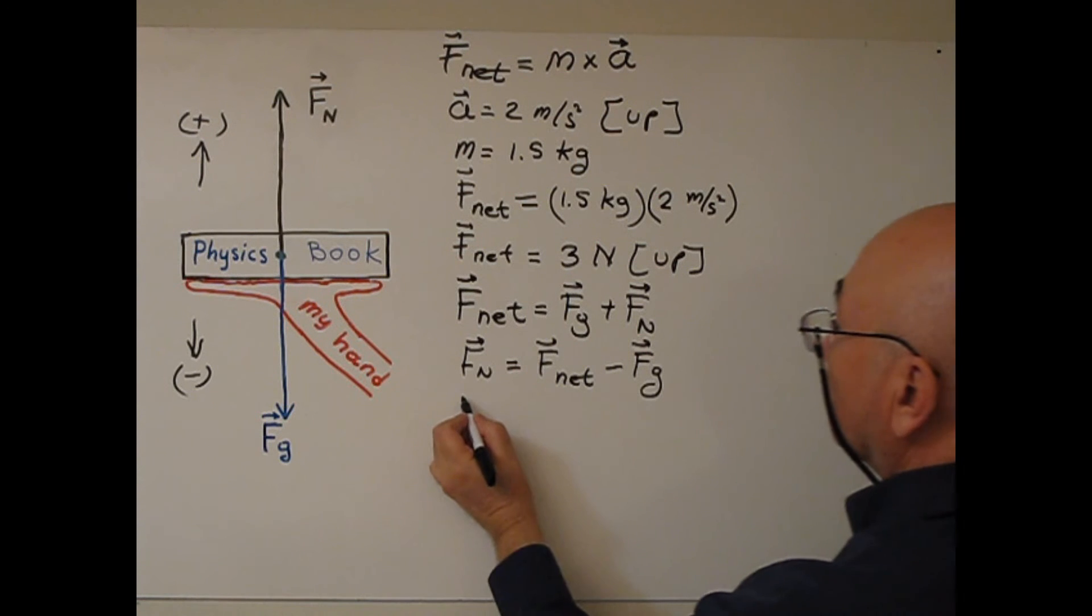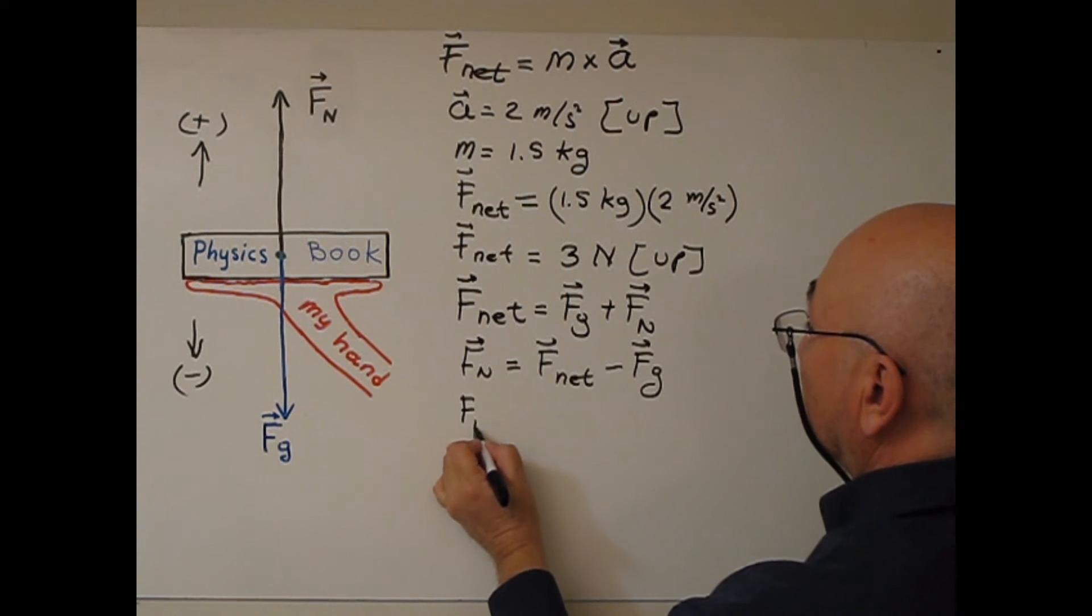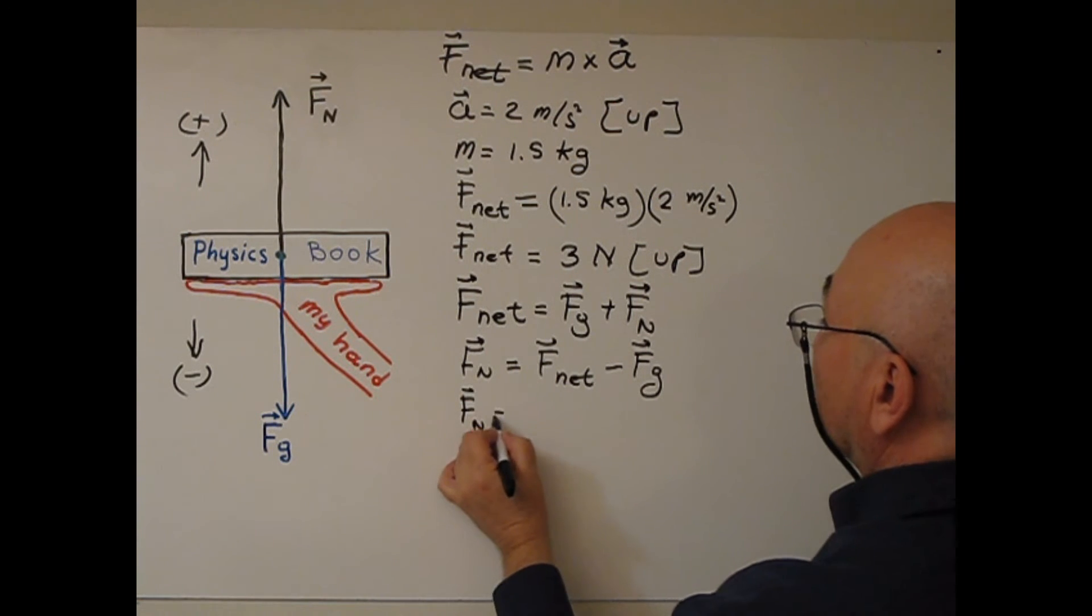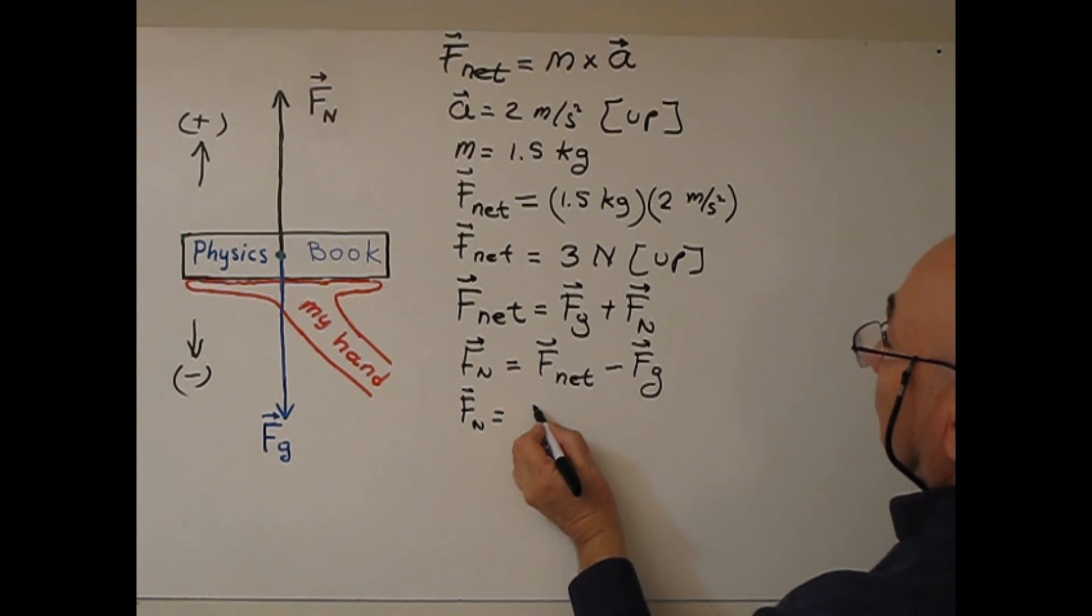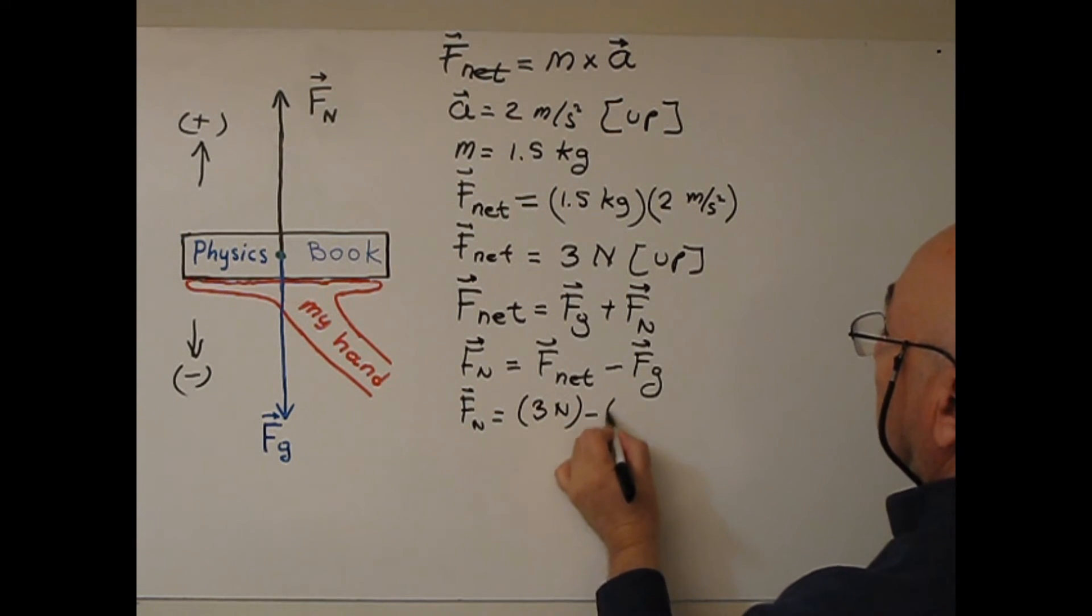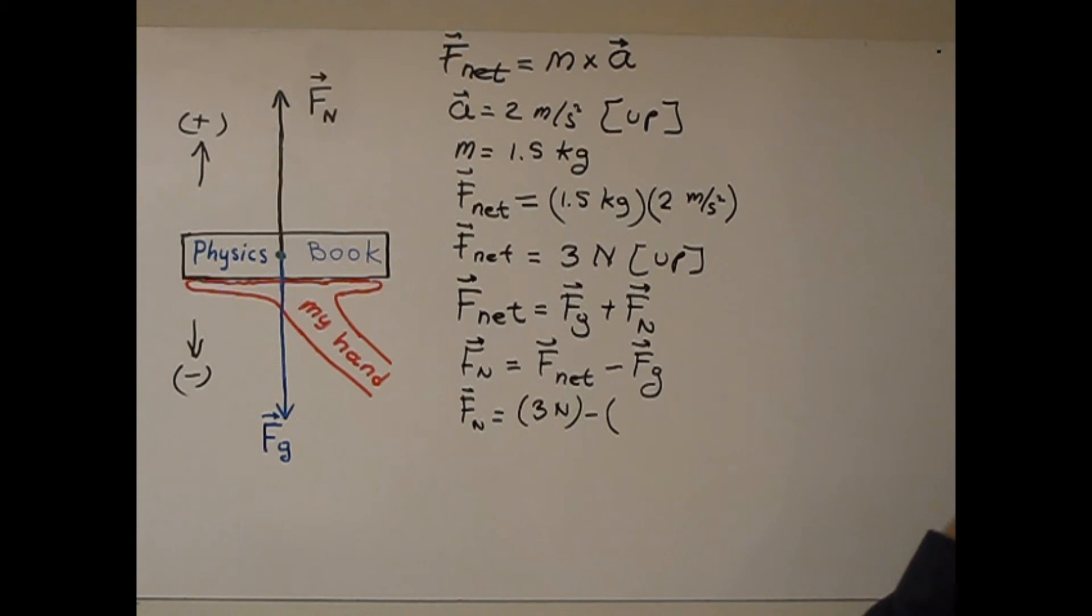So I calculated F net already. This is 3 newton up. So up is positive. So 3 newton minus Fg. I didn't calculate Fg. Let me calculate Fg.